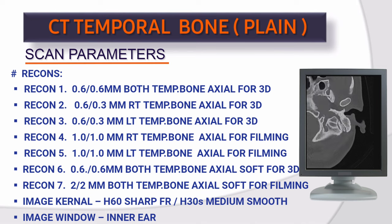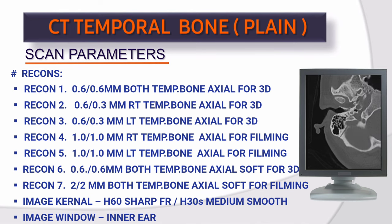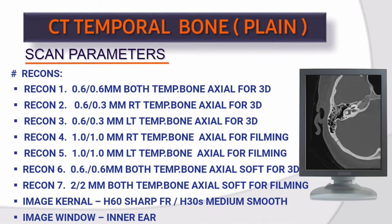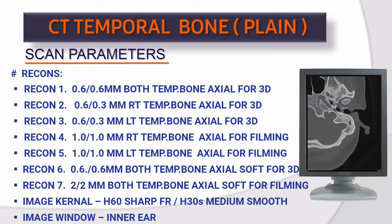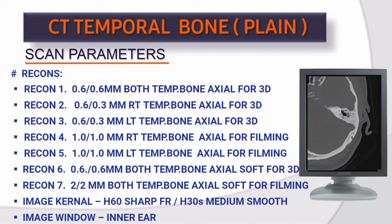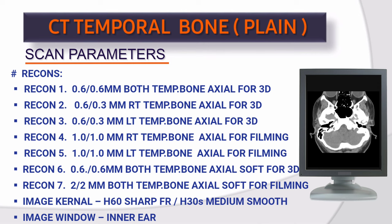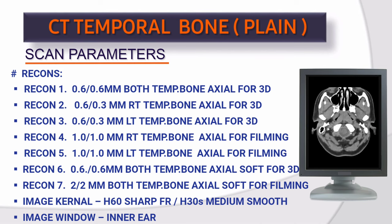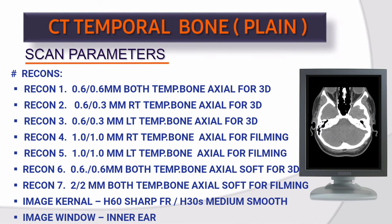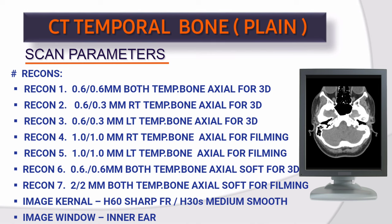Recon 3: 0.6×0.6 mm left temporal bone axial thin bone for 3D. Recon 4: 1.0×1.0 mm right temporal bone axial bone for filming. Recon 5: 1.0×1.0 mm left temporal bone axial bone for filming. Recon 6: 0.6×0.6 mm both temporal bone axial thin soft for 3D. Recon 7: 2×2 mm both temporal bone axial soft for filming. Image kernel: H60 sharp for bone, H30 medium smooth for soft tissue.